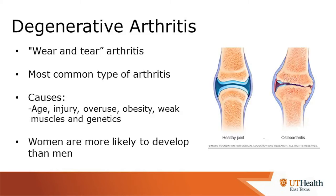Degenerative arthritis is also known as wear and tear. This is actually the most common type of arthritis, and causes include age, injury, overuse, obesity, weak muscles, and genetics. It's important to note that women are more likely to develop this type of arthritis than men.